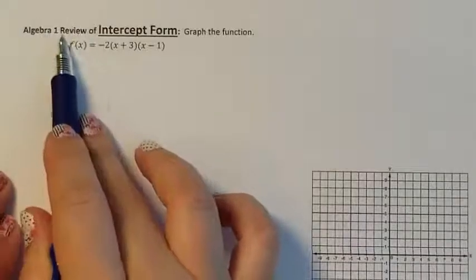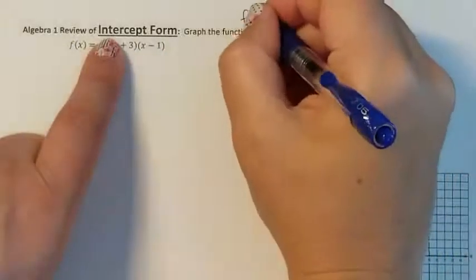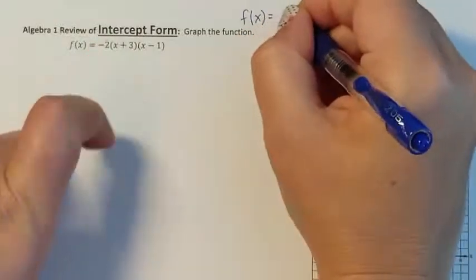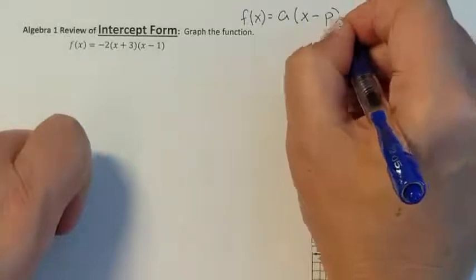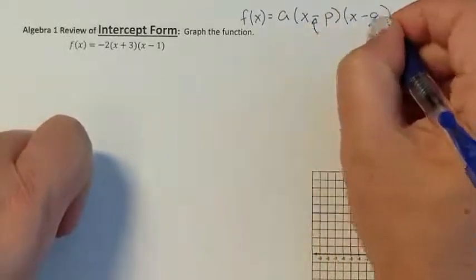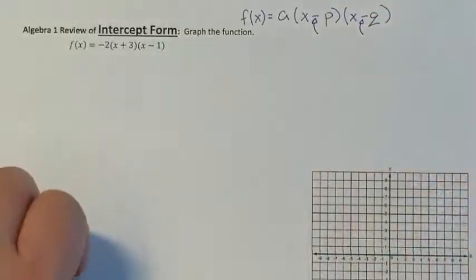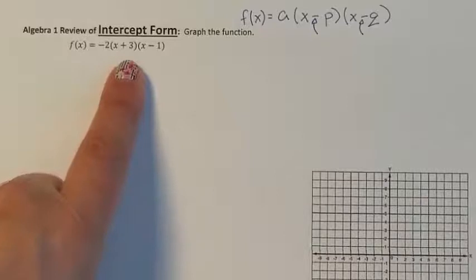Now we're going to review Algebra 1 intercept form. If you remember, the form for intercept form is f(x) equals, you have an a number on the outside. In the parentheses, you have x minus p, and then x minus q. Remember, these have to be subtractions. Let's go ahead and graph this function right here.